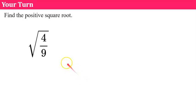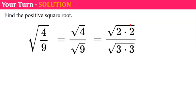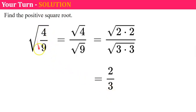Find the positive square root of 4 ninths. We find the square root of the numerator and the square root of the denominator separately. The square root of 4 is the square root of 2 times 2, and the square root of 9 is the square root of 3 times 3, giving us 2 over 3. You can verify: 2 thirds times 2 thirds is 4 ninths. Remember, they only asked us to find the positive root.